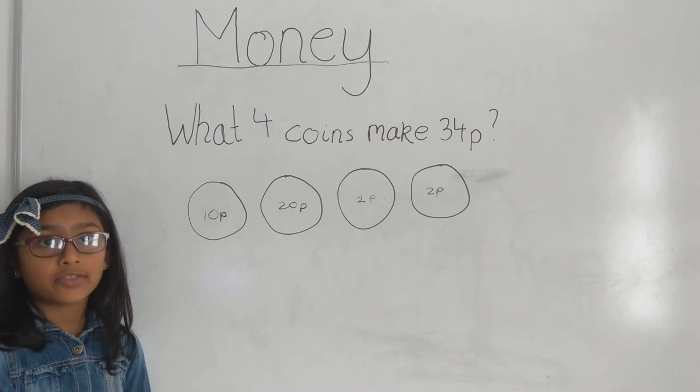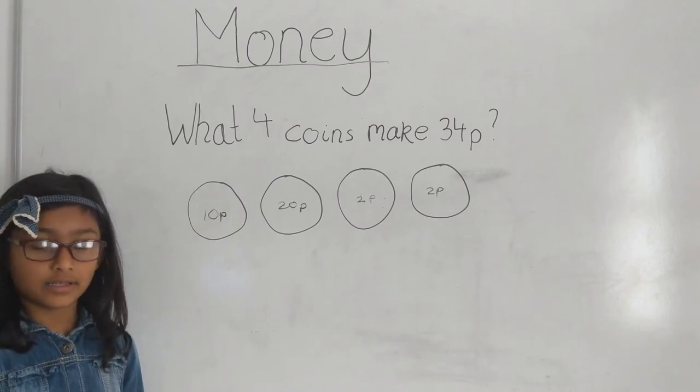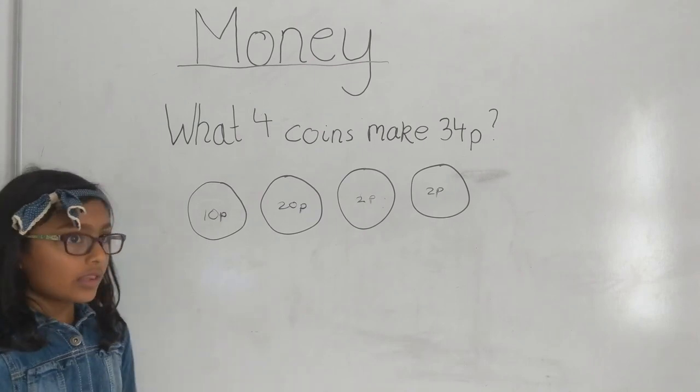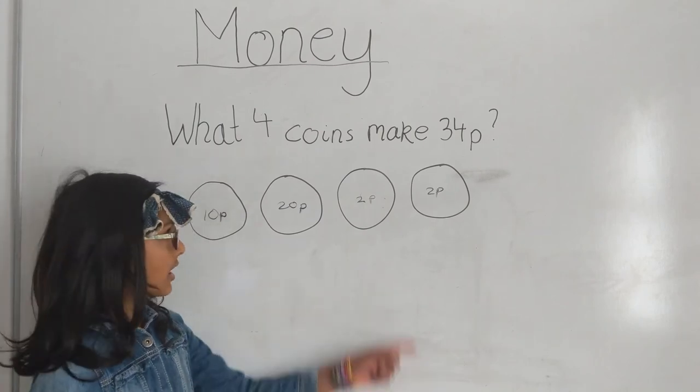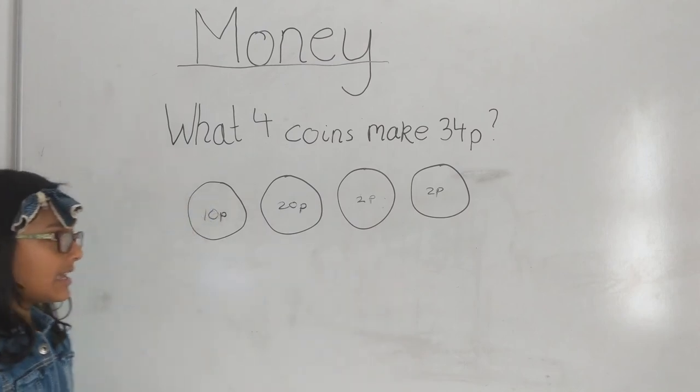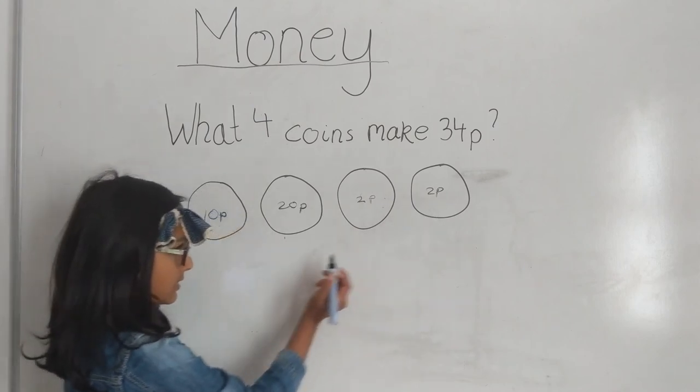And we could have done 1 add 3 but 3p isn't a coin so we can't do 1 add 3. So the answer to make 34 is 10p, 20p, 2p and 2p.